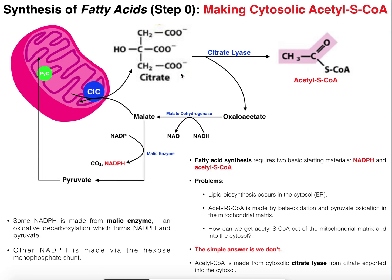The second thing we need to understand is that the basic molecule from which we're going to make fatty acids is acetyl-CoA. Recall that acetyl-CoA is made in large amounts inside the mitochondria. We've talked about the pyruvate dehydrogenase complex, which is the linking reaction between glycolysis and the Krebs cycle — that acetyl-CoA forms in the mitochondria. Also, beta-oxidation's major product is acetyl-CoA. So we're making a lot of acetyl-CoA in the mitochondria, but we need acetyl-CoA in the cytoplasm because that's where fatty acid synthesis is going to occur.